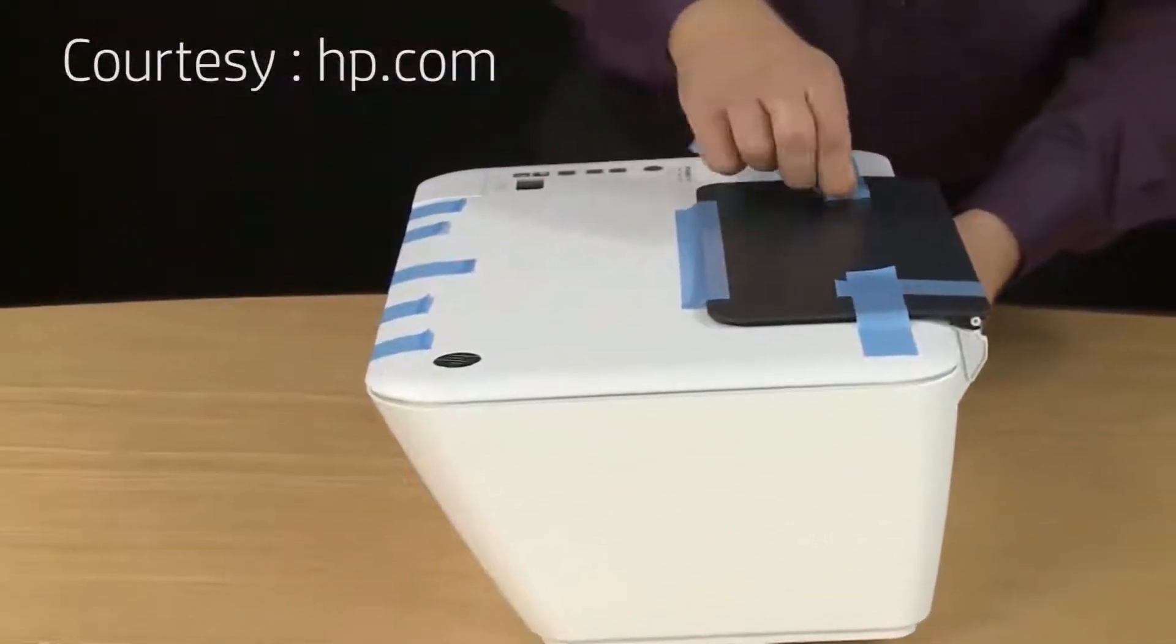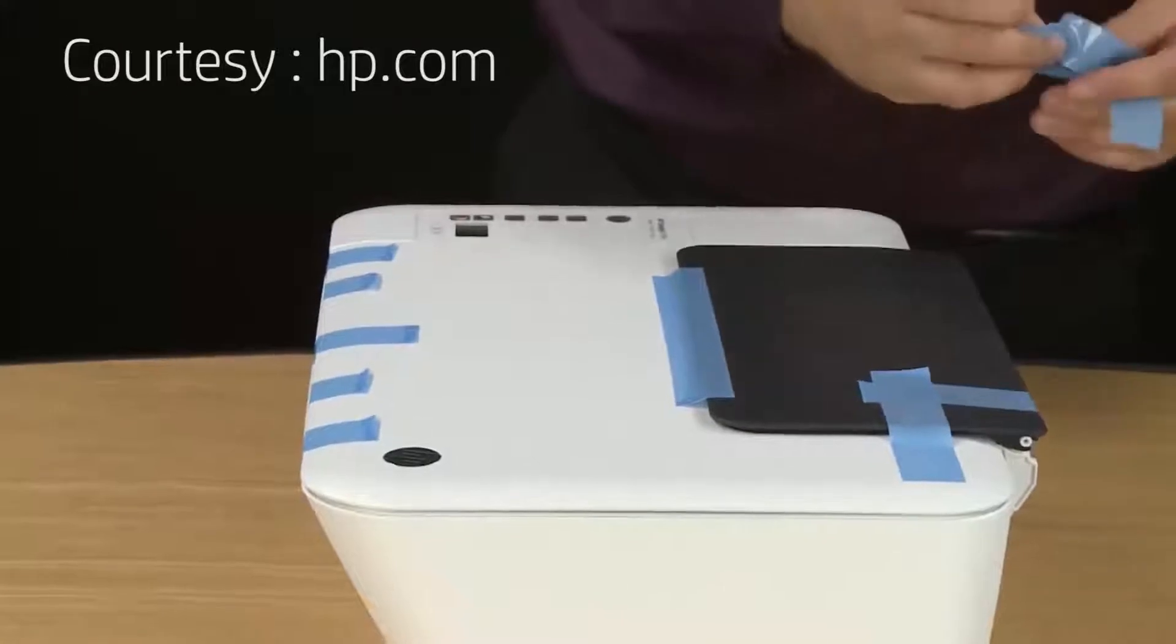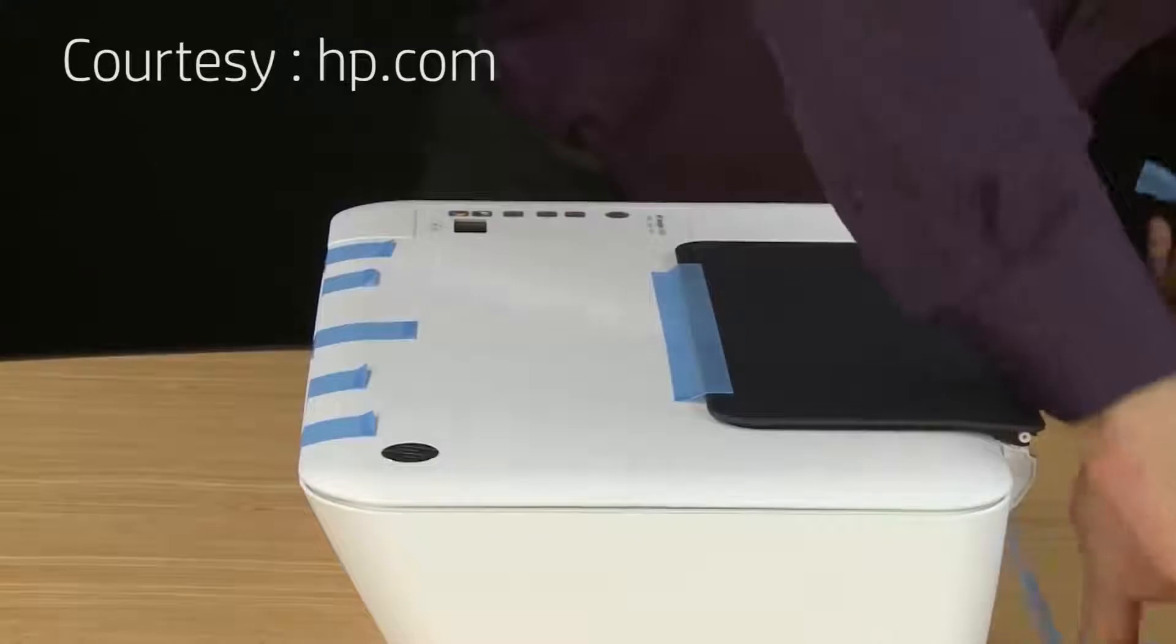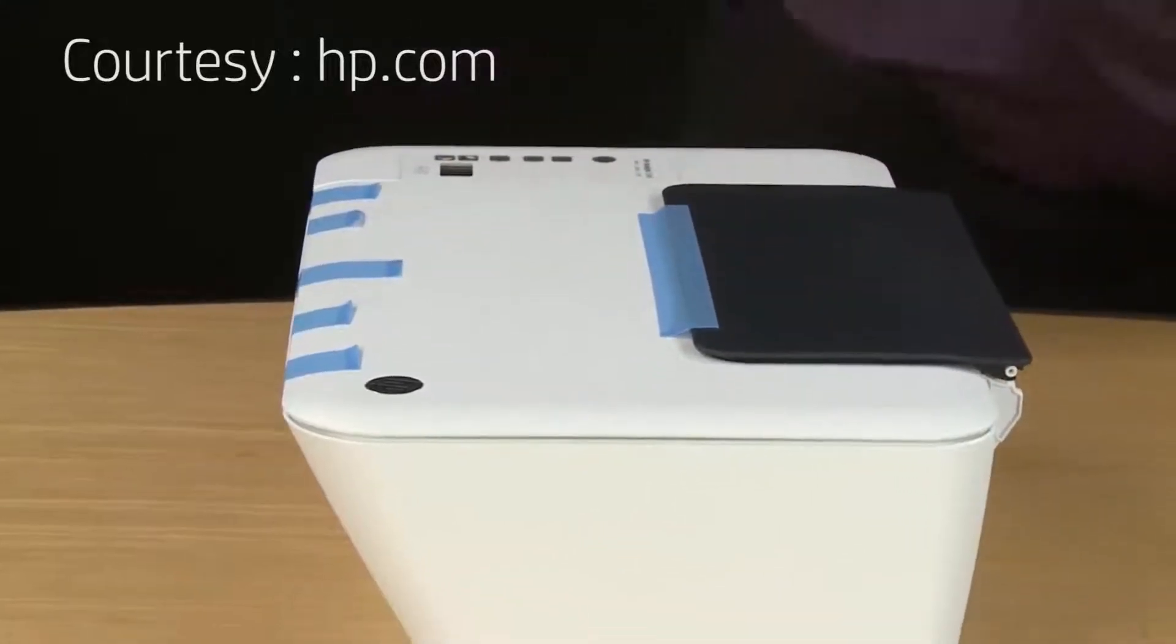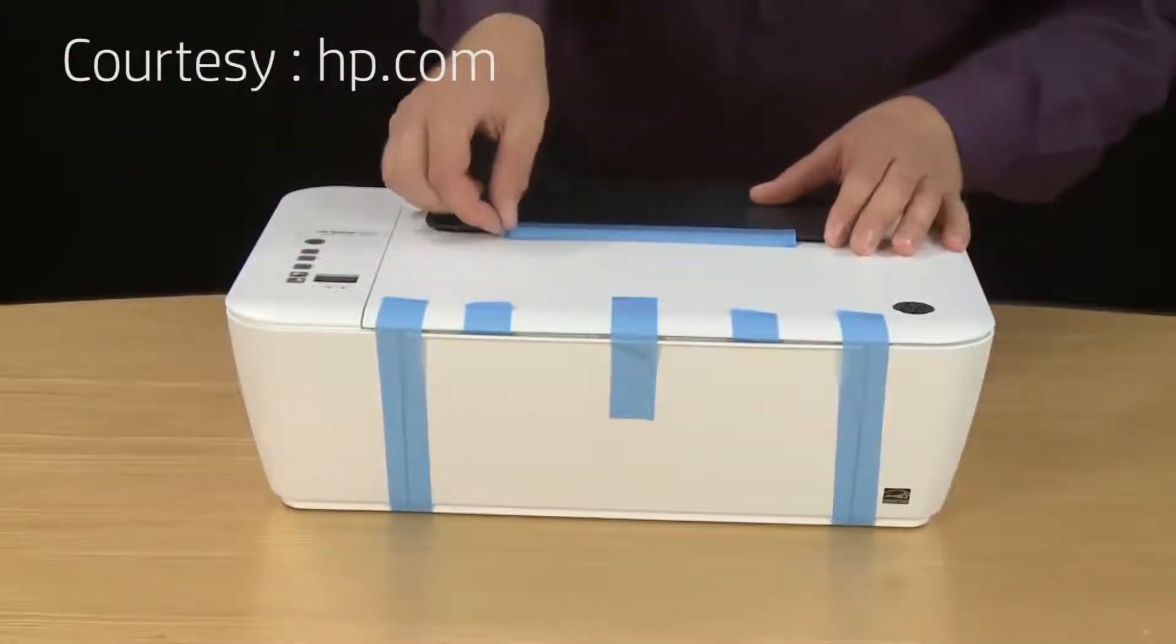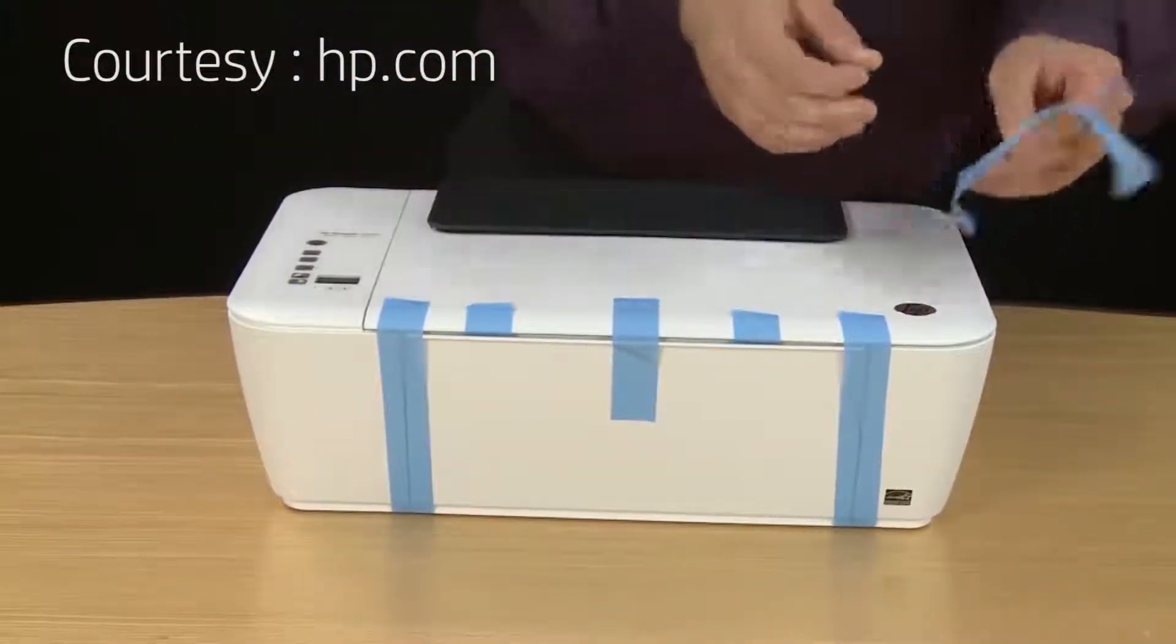Next remove a few other pieces of tape that are on the top of the printer that are holding the input tray shut. Take off the last strip that's holding the input tray. Once that's free we'll move to the front.